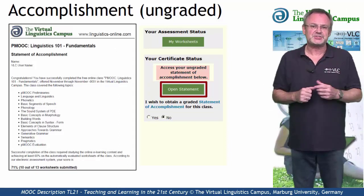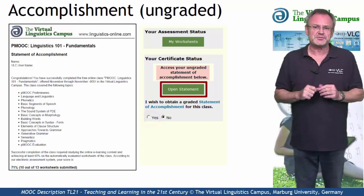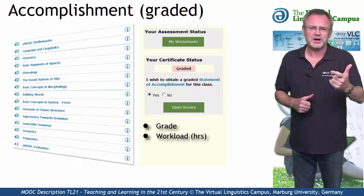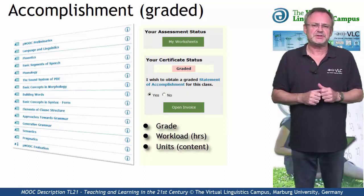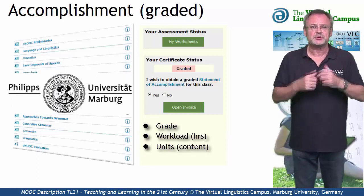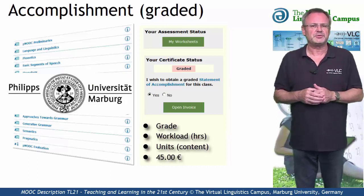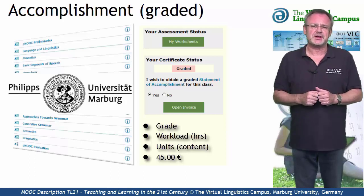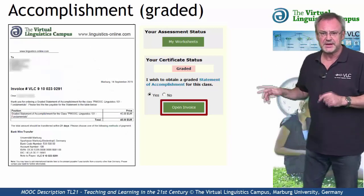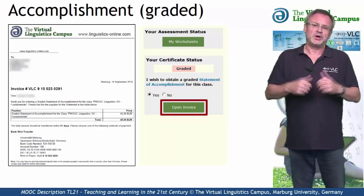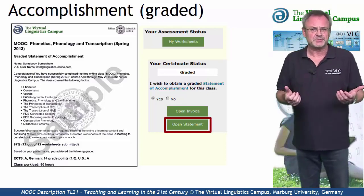If you want to obtain a graded statement of accomplishment, select 'Yes' down here. This most advanced option of certification includes your precise grade, the workload in hours, and a complete list of all the tasks you successfully submitted. This graded statement of accomplishment is issued by Marburg University in conjunction with the Virtual Linguistics Campus, and it involves a fee of currently 45 euros. Once you have satisfied the conditions and decided to obtain such a certificate, you first have to open the invoice and transfer the money to Marburg University. Once your payment has been accepted, you can download your personal graded statement of accomplishment via mouse click.